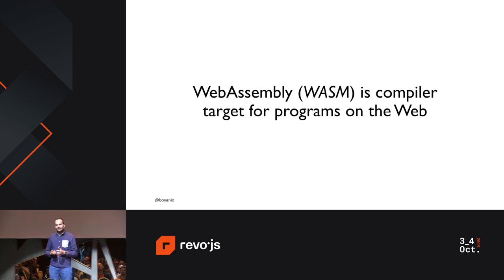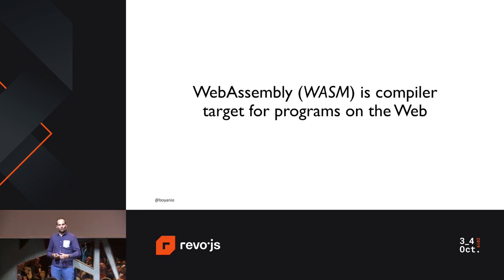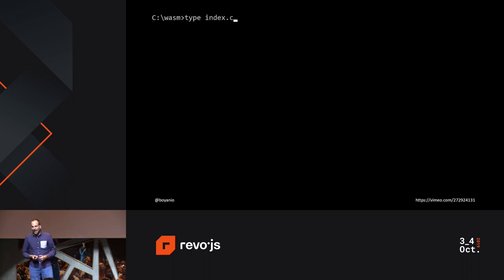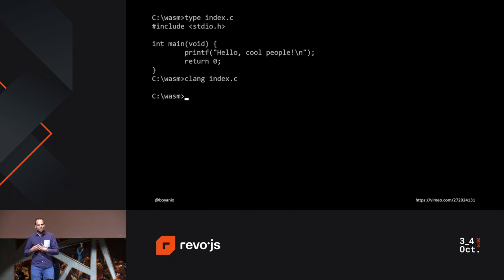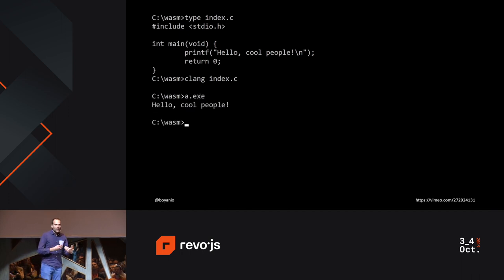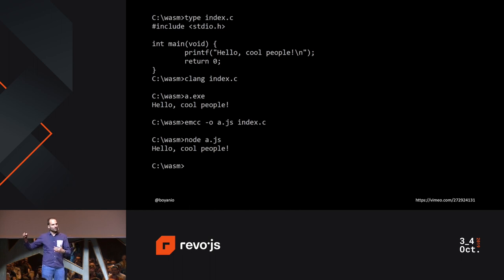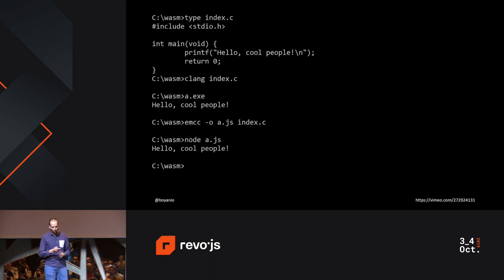WebAssembly is a compile target for the web. It allows us to compile from languages like C, C++, and Rust and run this in your browser and Node.js environment. If we have code written in C, we can compile it natively on Windows or Linux, and then use the exact same source code to compile to WebAssembly and run it in the browser or Node.js. So we extend what compilers have today by adding a new compilation target for the web.